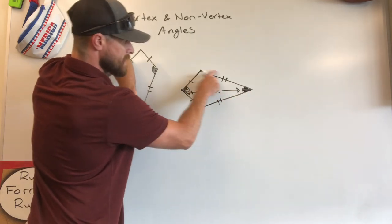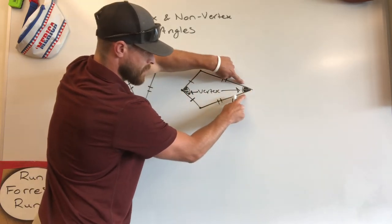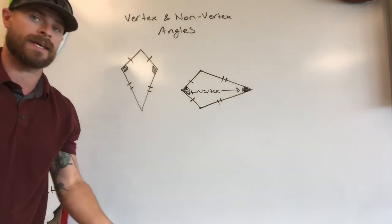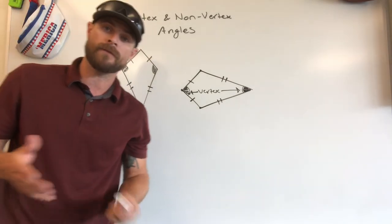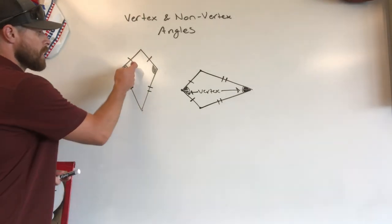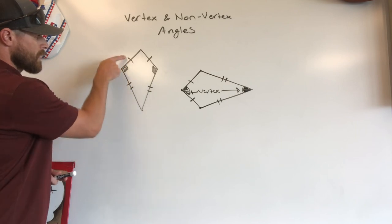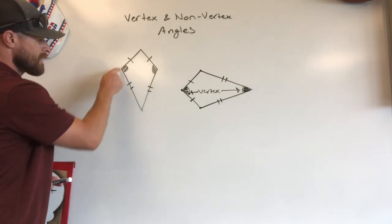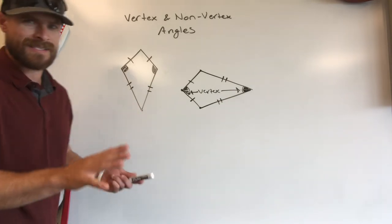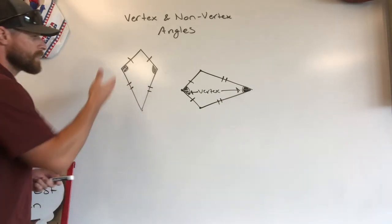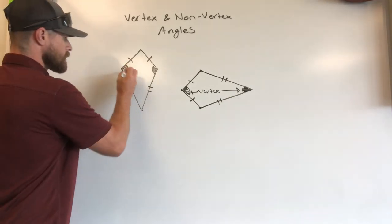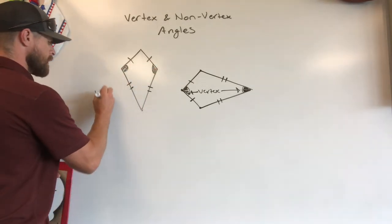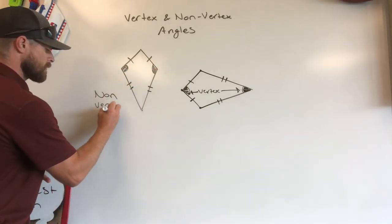This side is the same as this side, forming this angle, meaning it is a vertex angle. Our non-vertex angles are the angles that are formed from two sides that are different. We've got the one marking up here, two markings here, telling me that this side and this side are not the same. They are not congruent. So what they are going to form are these angles here and here, which we call non-vertex angles.